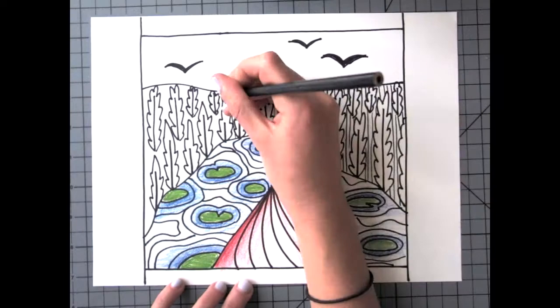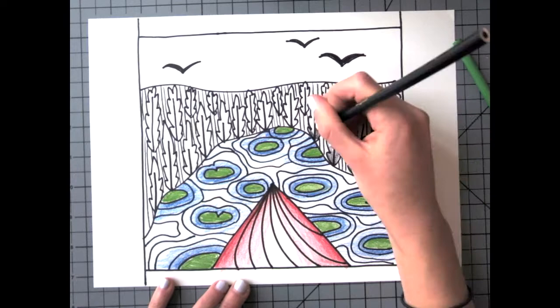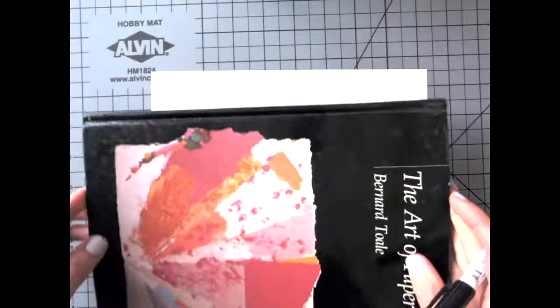Then I varied my line width by using a black colored pencil to add some more texture and detail and added more value in those flowery reed type shapes, whatever those are.